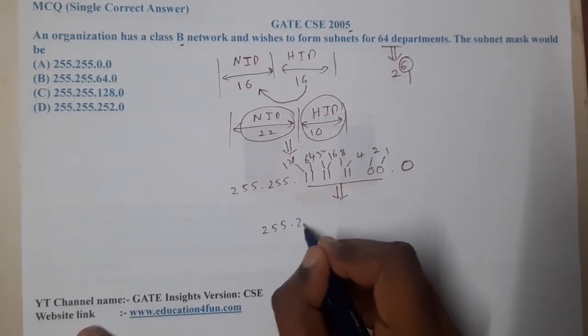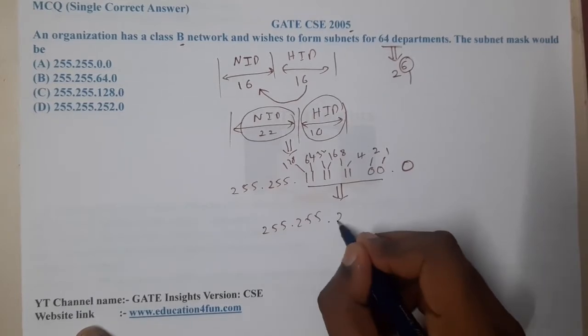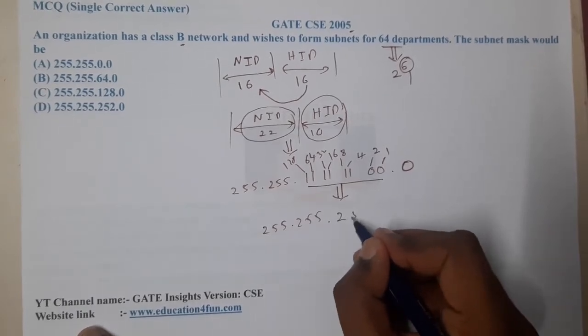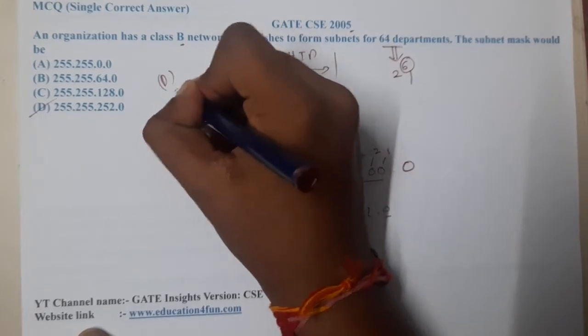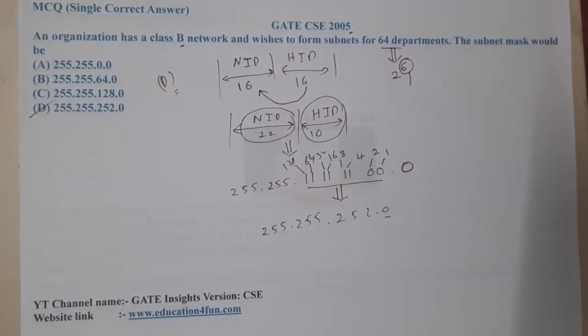So the result is 255.255.252.0. So option D is the correct answer. It's a quite direct question, I guess.